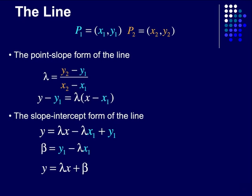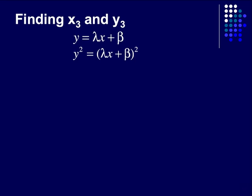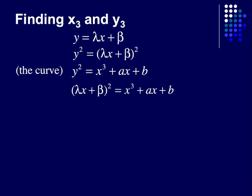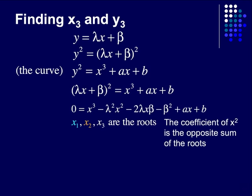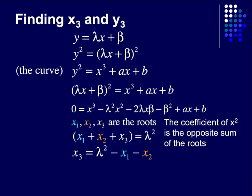If we define a variable beta to equal y1 minus lambda x1, we get y equals lambda x plus beta. With this equation, we can find x3 and y3 of point three. If we take our equation, square both sides, and remember that the curve has the equation y squared equals x cubed plus ax plus b, we can set these two equations equal to each other. After distributing and rearranging, we get a polynomial with three roots: x1, x2, and x3. Because this is a polynomial, the coefficient of x squared will be the opposite sum of the roots, so x1 plus x2 plus x3 equals lambda squared. Rearranging, x3 equals lambda squared minus x1 minus x2. To find y3, we plug x3 into the original line equation and then reflect it.